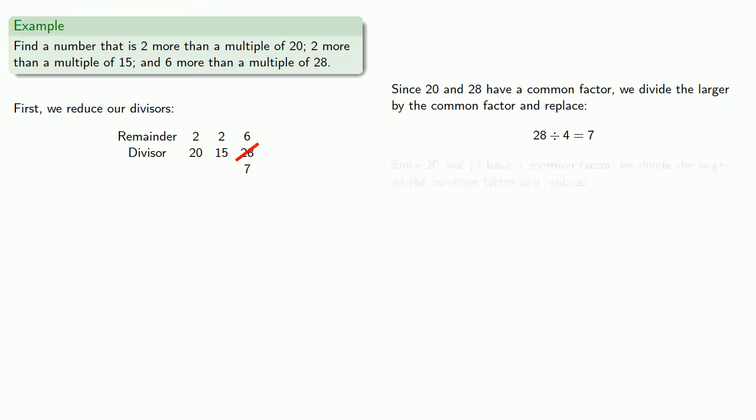Next, since 20 and 15 have a common factor, we divide the larger by the common factor and replace. 20 divided by 5 is equal to 4.